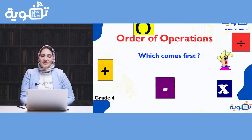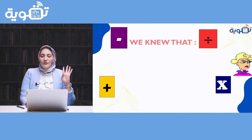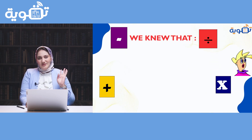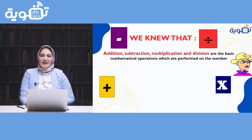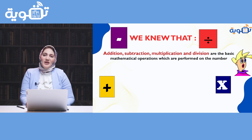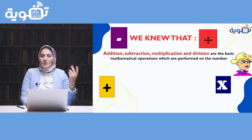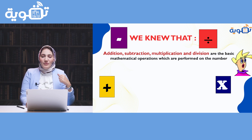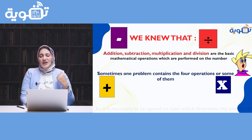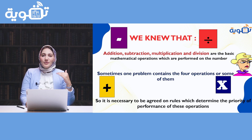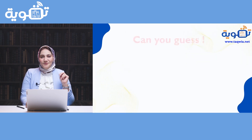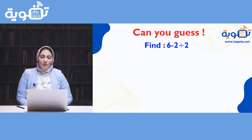Which comes first? Here we have four operations: addition, subtraction, multiplication, and division. But sometimes you may have two operations in one question — what are you going to do? What if you have three or four operations? Here we have an order we have to follow. Can you guess the answer for this question?